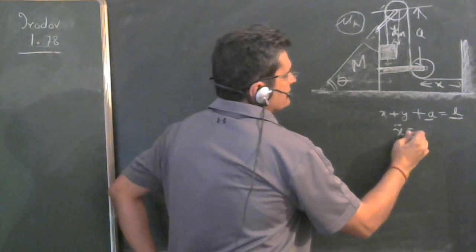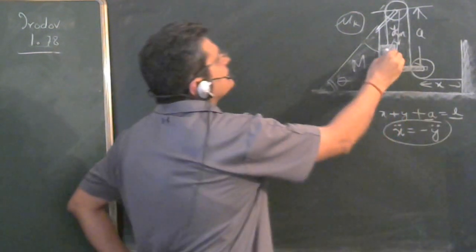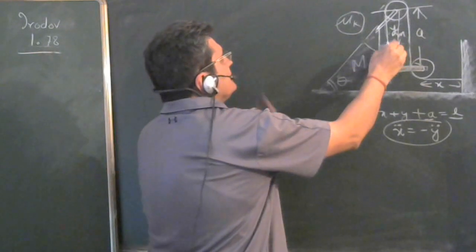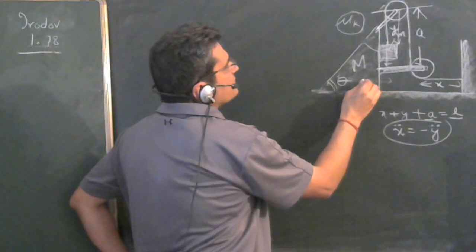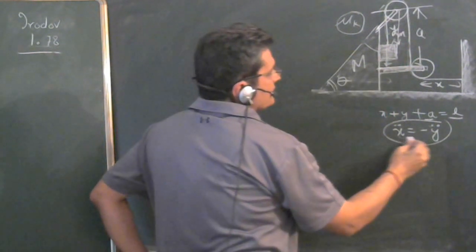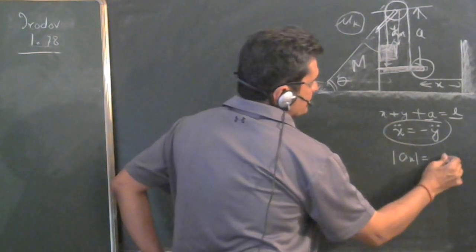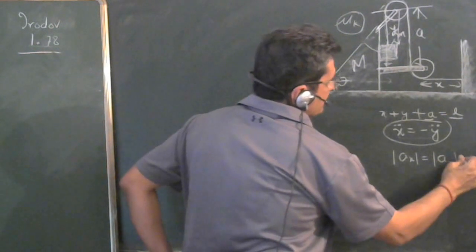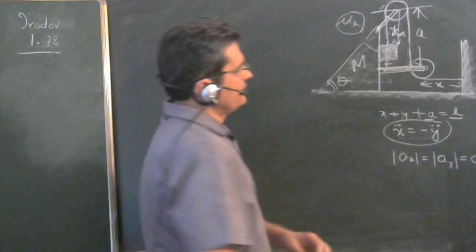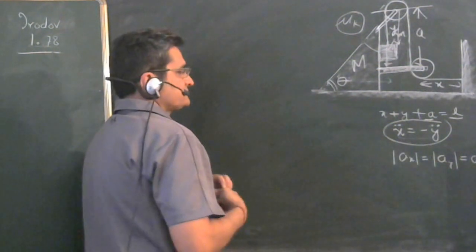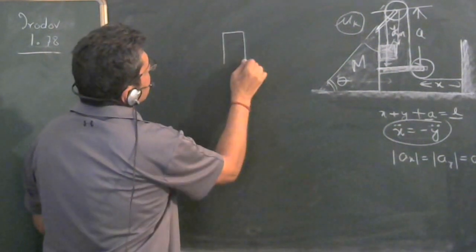Differentiating twice, since L and a are both constants, we get X double-dot equals minus Y double-dot. This means the acceleration of mass m in the vertical direction relative to the wedge equals in magnitude the acceleration of wedge M in the horizontal direction. Both equal 'a' — this is a very important result.